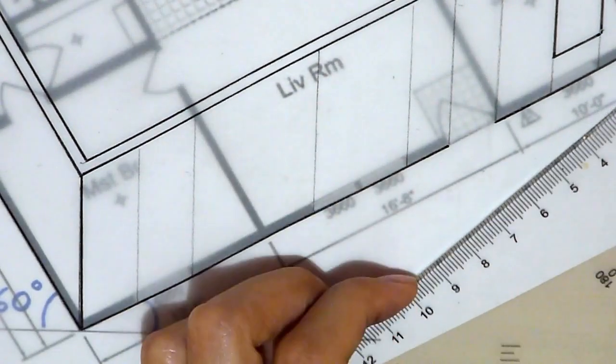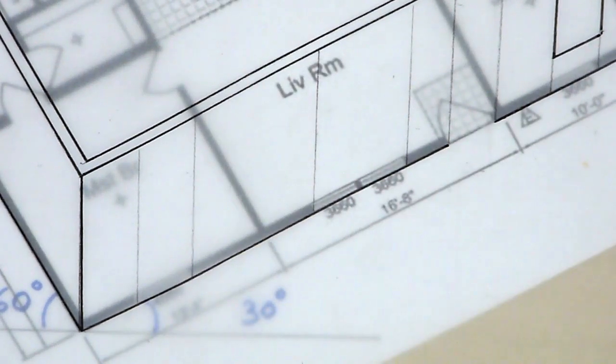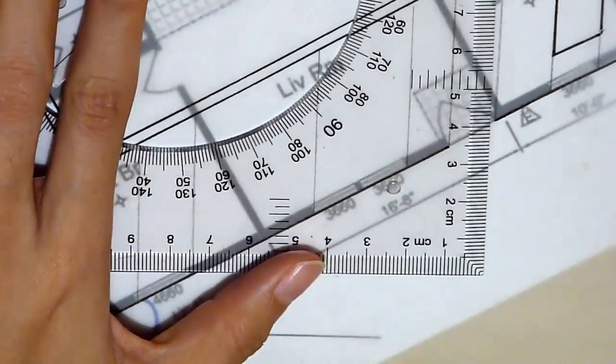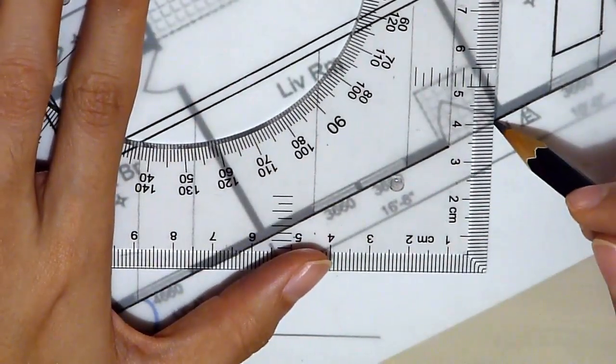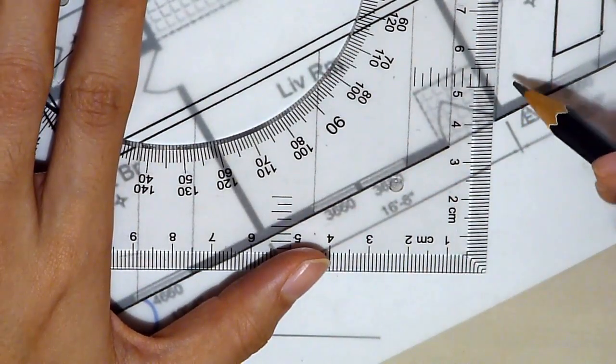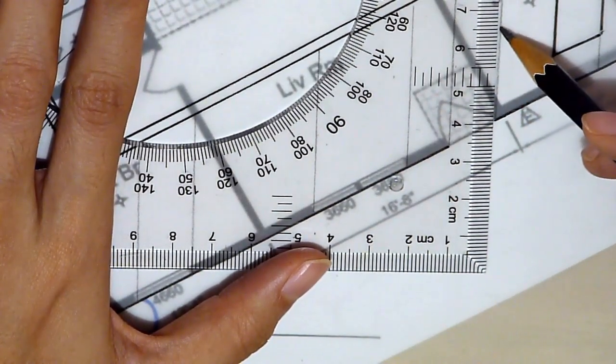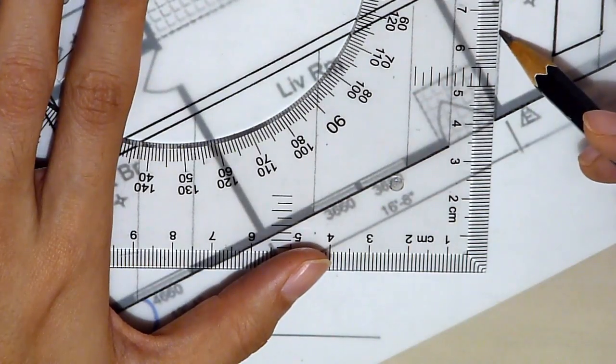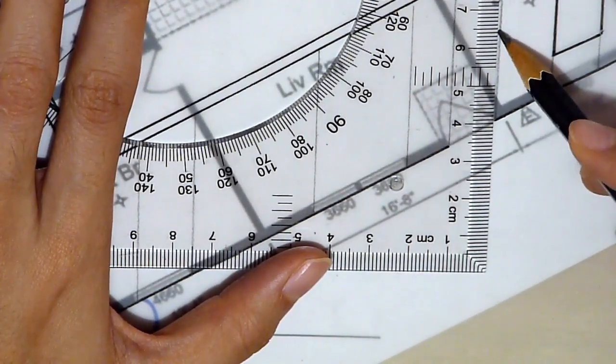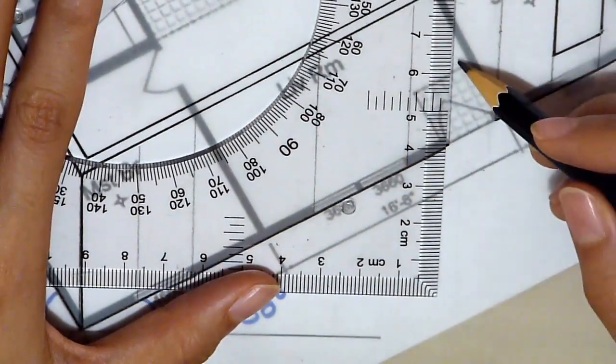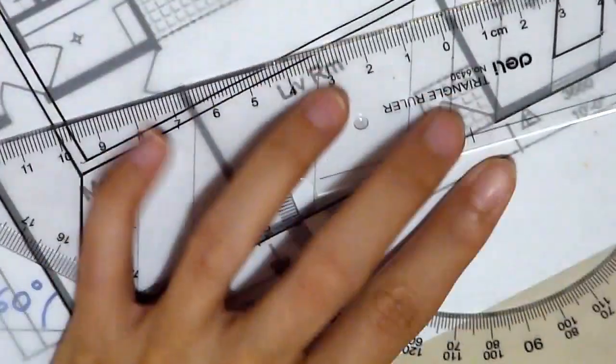So for door, it's the same principle. After doing the vertical line reference, I will then make sure that the height of the door is correct, which is roughly at about 2.4 or 2.5 meter. Put a marker there. And then I'll join them.